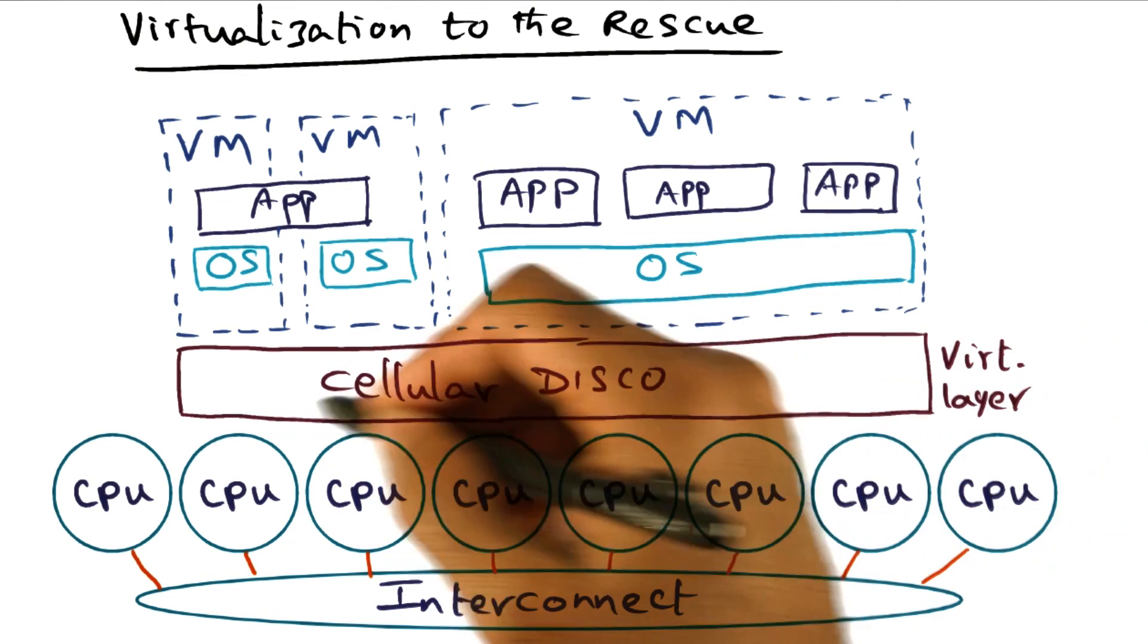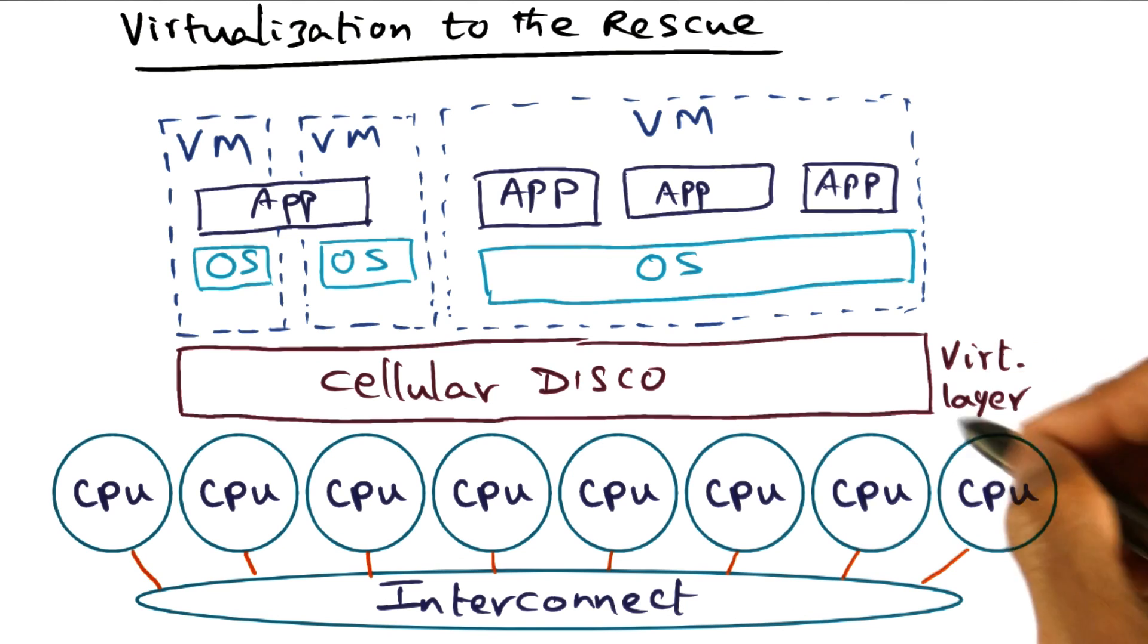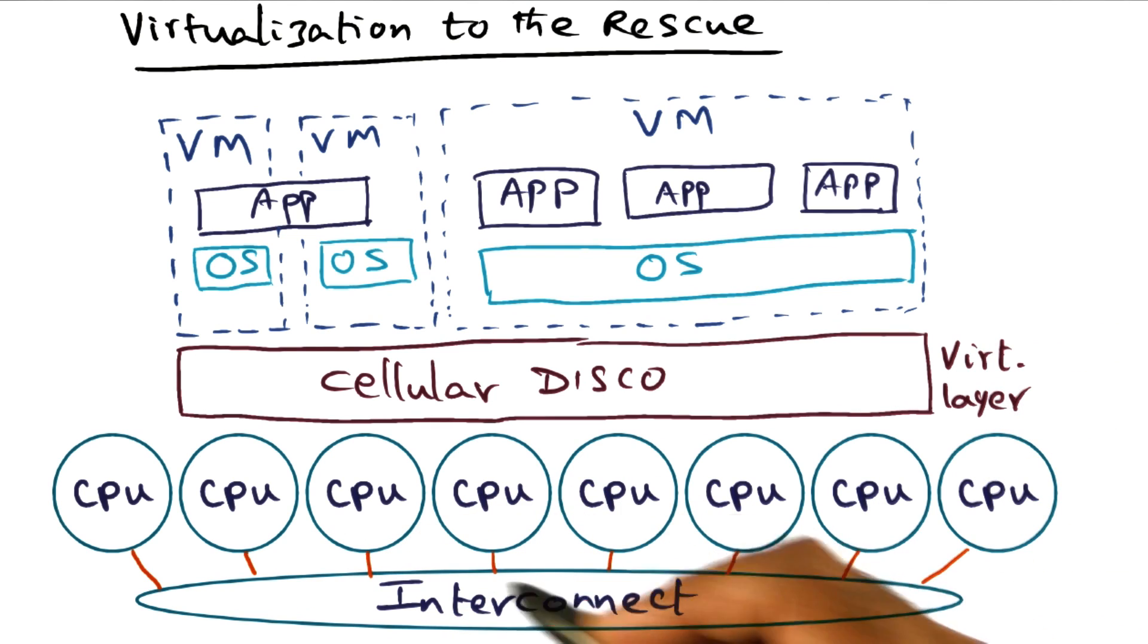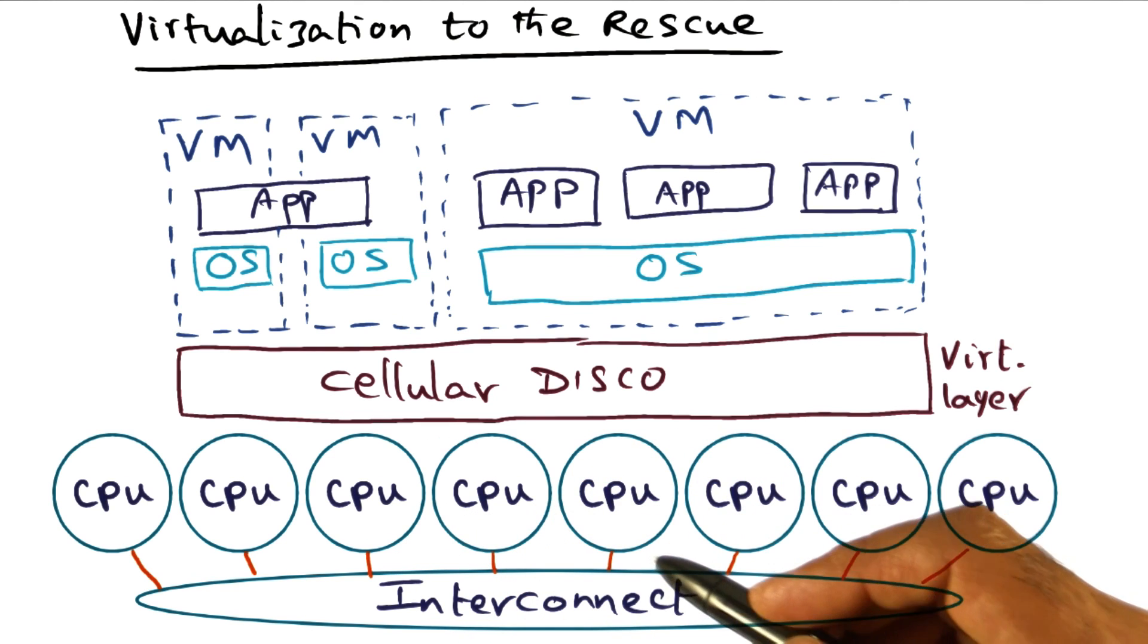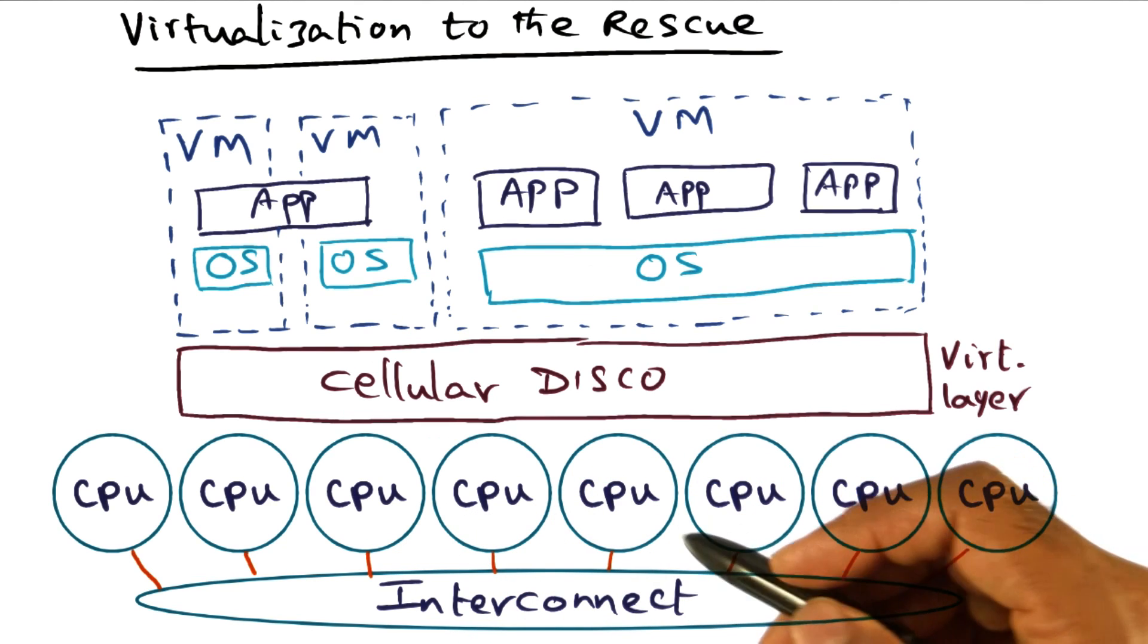There is a thin virtualization layer, which is the Cellular Disco layer. The Cellular Disco layer manages the hardware resources, namely CPU, the I/O devices, memory management, and so on.